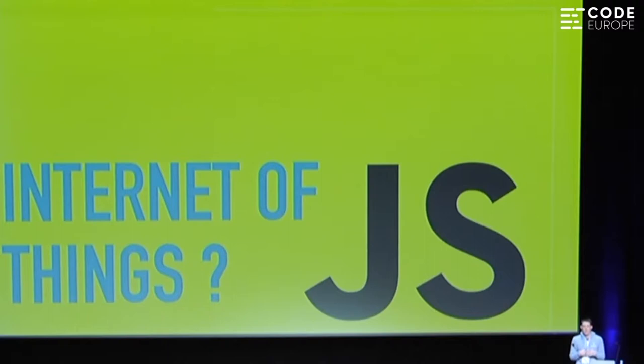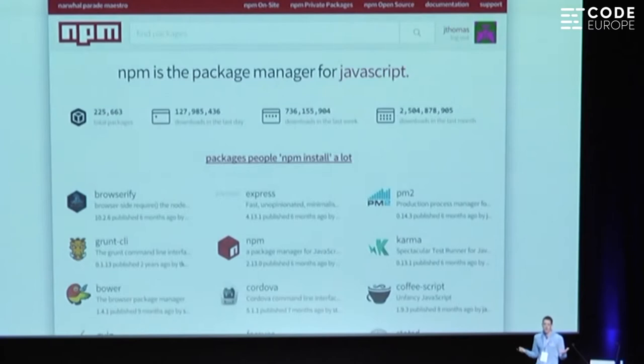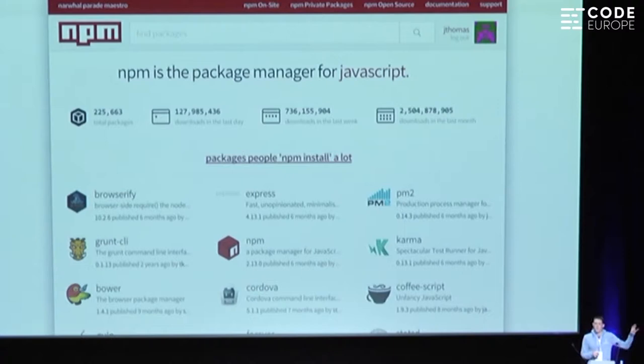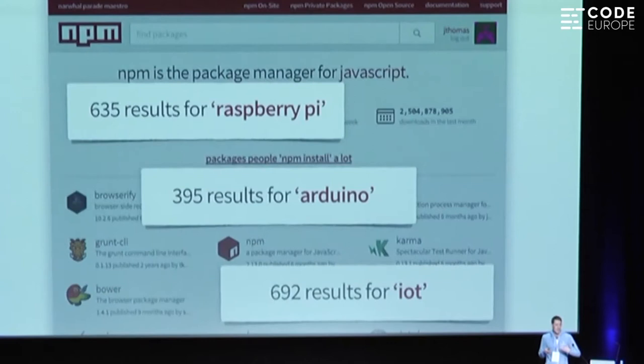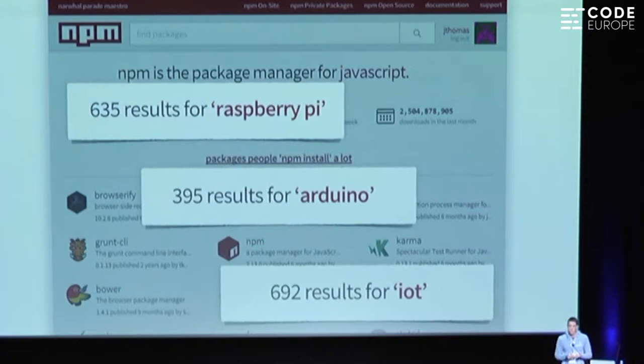Like any JavaScript developer today, I'm overly reliant on its ecosystem. I can't really do anything without going to NPM and installing a module. One of the strengths of JavaScript is the size of its ecosystem — there are over a quarter of a million modules in NPM. If you search for off-the-shelf devices, for the Raspberry Pi there were 635 modules, the Arduino about 400, and generally tagged with IoT there are close to 1,000 modules.